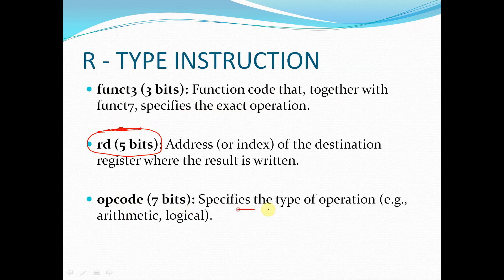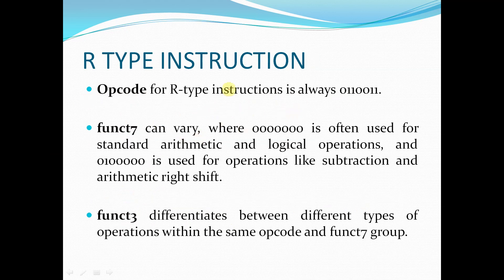funct3, together with funct7, specifies the exact operation. The opcode specifies the type of operation — for example, arithmetic or logical. The opcode for R-type instructions is always 0110011. When developing Verilog code, we will write a case statement: if we see this specific opcode, we know it is an R-type instruction.